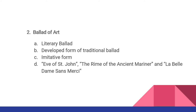The second kind is the Ballad of Art, also called the Literary Ballad. It is the literary development of the traditional form and is considered the imitative form of the traditional ballad. Some of the best known ballads of art are Eve of St. John, Rime of the Ancient Mariner, and La Belle Dame Sans Merci.